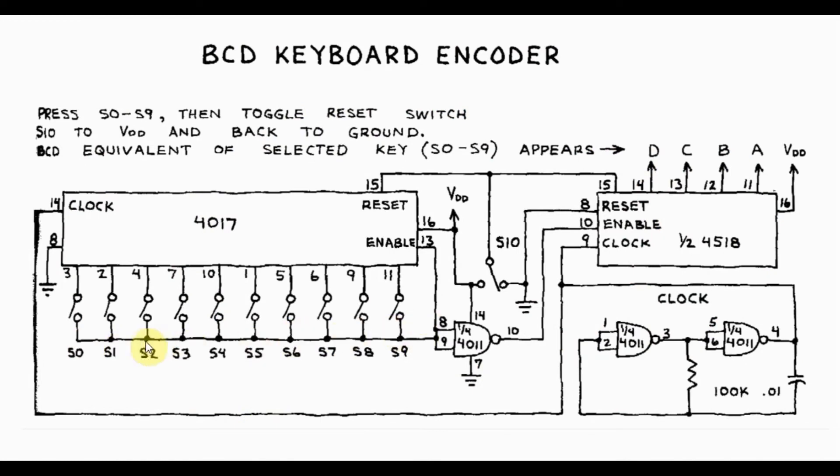By pressing one of the switches from S0 to S9 and then toggling the S10 switch to VDD and back to ground, the Binary Coded Decimal equivalent of the selected key will appear at the output of the 4518 counter.